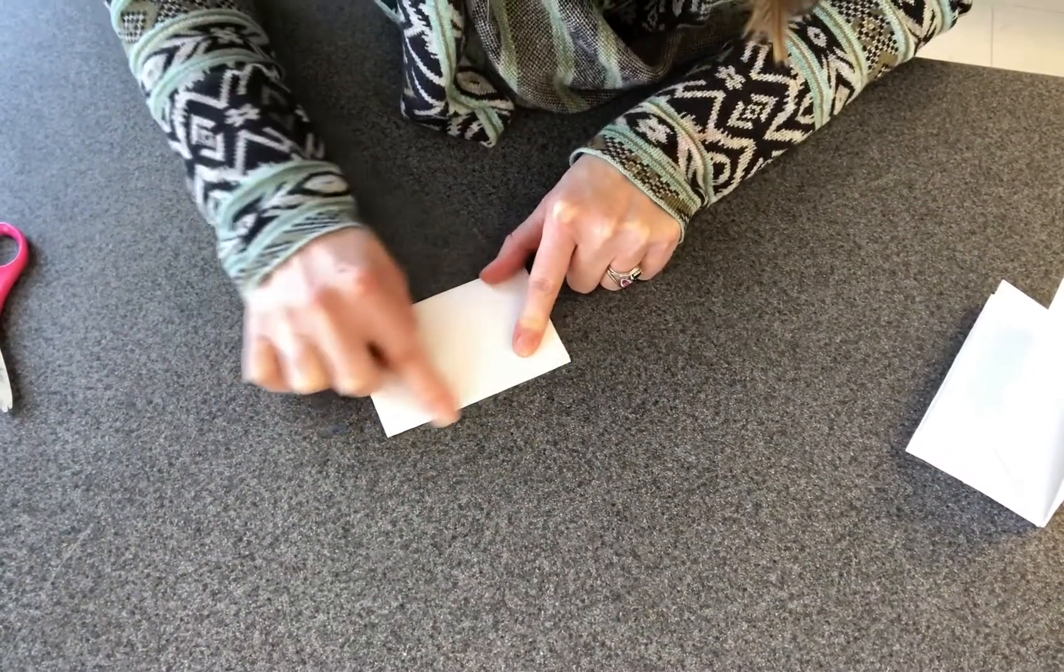Now this is where you're going to cut. It's on the creased side, so the crease side is where you're going to take your scissors and you're going to cut right down that folded line.